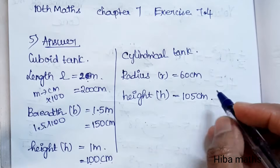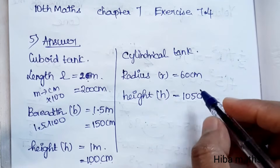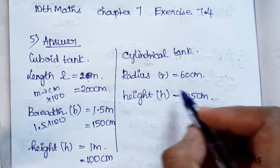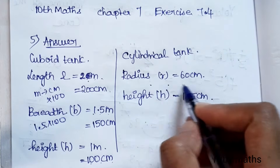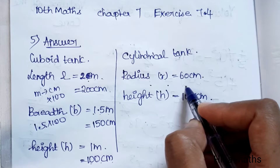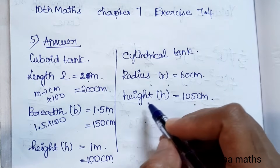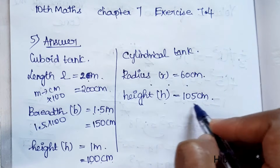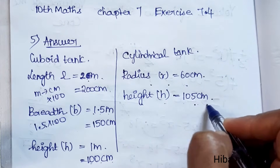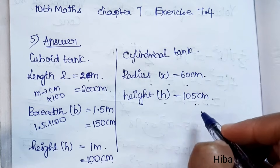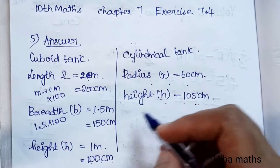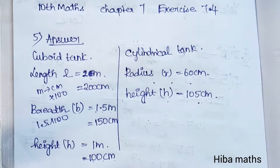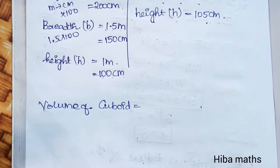For the cylindrical tank, we have radius r = 60 centimeters, and height h = 105 centimeters. Now we will calculate the volumes using the appropriate formulas.